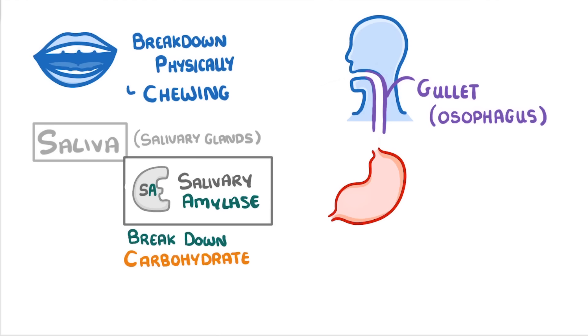Now, the stomach is basically a muscular sac, and it does three important things that you need to know about. One, it contracts its muscular walls to push the food around and mix it.